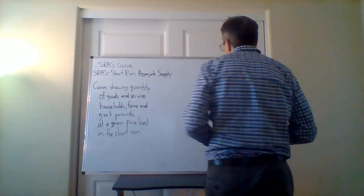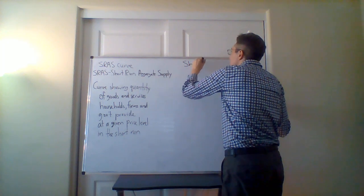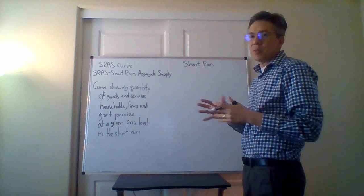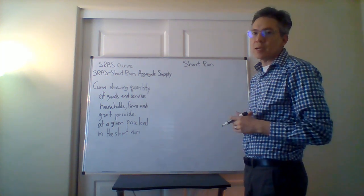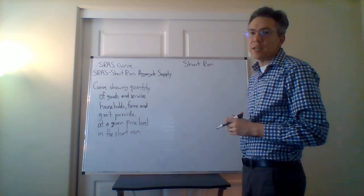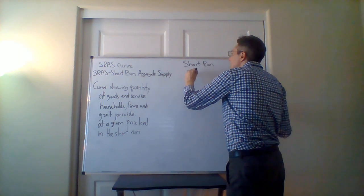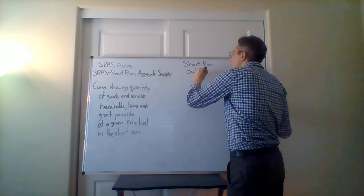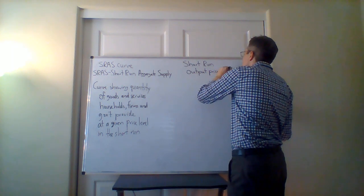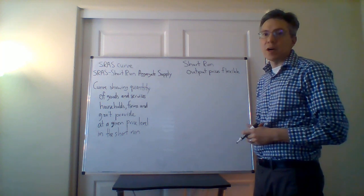So what do we mean by the short-run in this model? The short-run isn't necessarily a given period of time, albeit some economists will actually say something about that. You'll see that in terms of one of the lecture slides, but in general, we're saying here for the short-run, this is where output prices are flexible. The output basically being the final product.